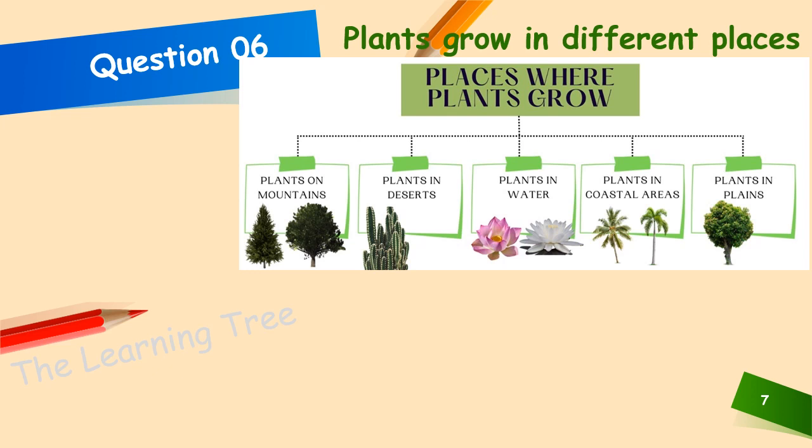Places where plants grow: they grow on mountains, deserts, in water, in coastal areas and in plains.